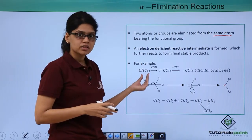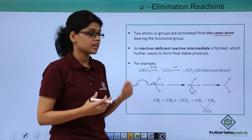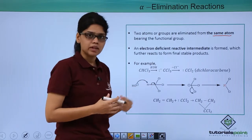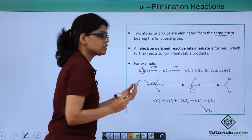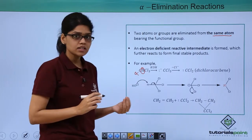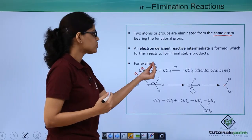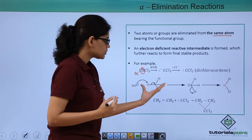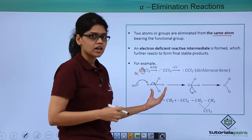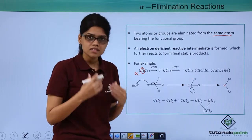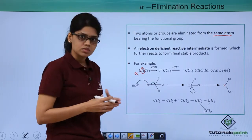For example, we have chloroform (CHCl3), and when this molecule is treated with a strong base like KOH, we get CCl3 minus. OH minus is a very strong base and it abstracts the alpha hydrogen from the alpha carbon, which is attached to 3 chlorine atoms, giving us the CCl3 minus ion. Another atom then gets eliminated from this ion, resulting in the formation of CCl2, which is a highly reactive intermediate called dichlorocarbene. The mechanism is also shown here.